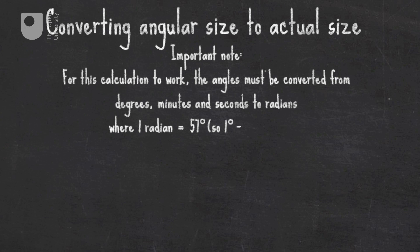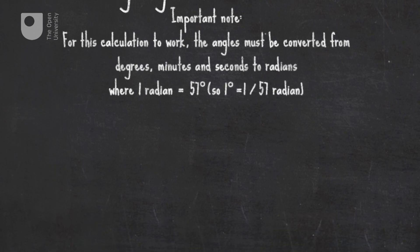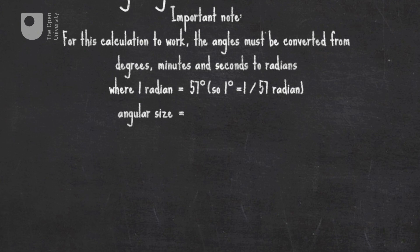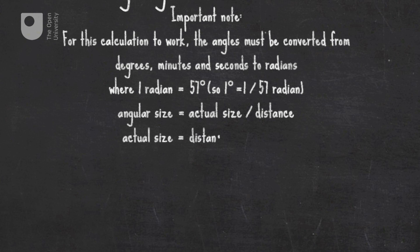So 1 degree equals 1 over 57 radians. Angular size equals actual size over distance. Actual size equals distance multiplied by angular size.